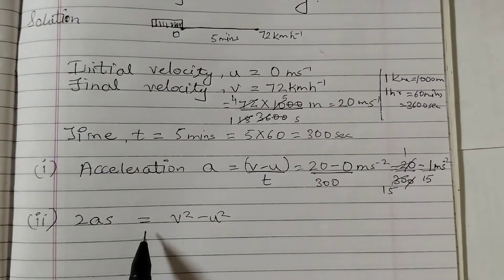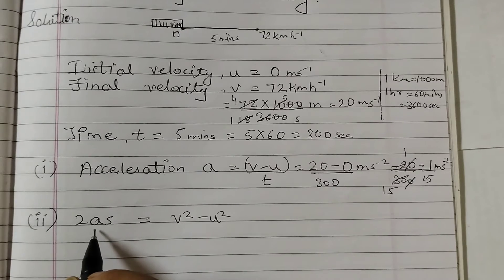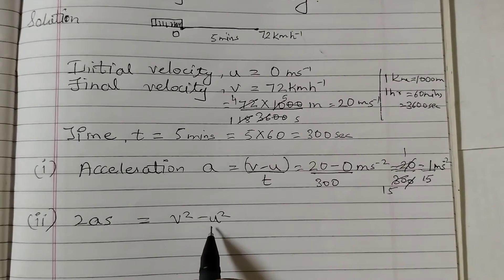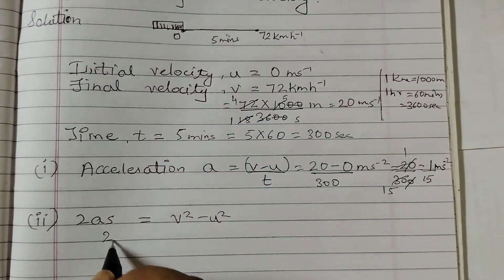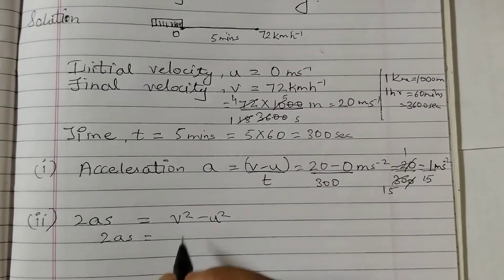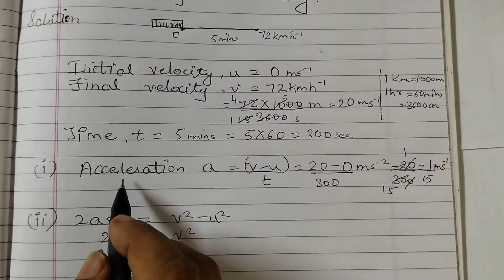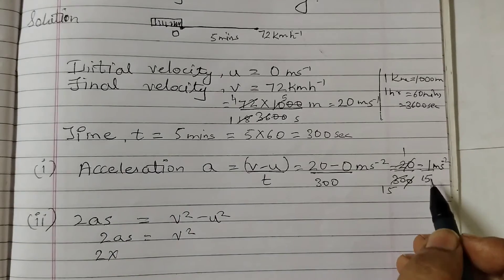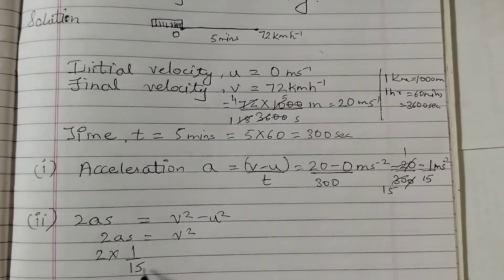Next part is we need to find the distance traveled by the train. The formula we are going to use is 2as equals v squared minus u squared, where s is the distance, a is acceleration, v is final velocity, and u is initial velocity. Since u is 0, we can rewrite this as 2as equals v squared.